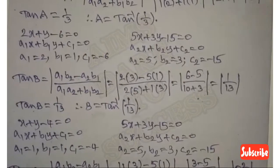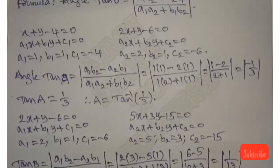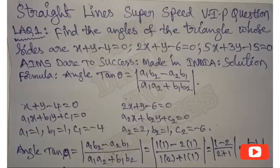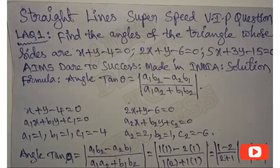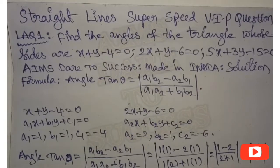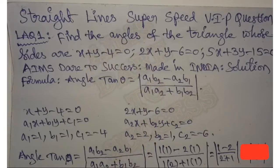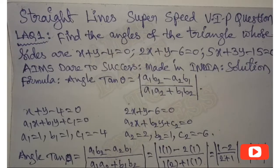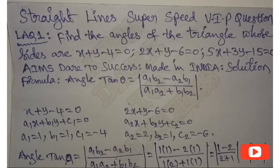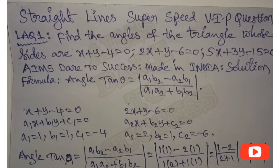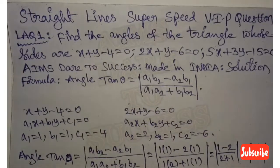If you are satisfied with my explanation, you can use this shortcut tan theta formula — mod of (a1*b2 minus a2*b1) by (a1*a2 plus b1*b2) — anywhere to find the angle between two lines. Please subscribe to our channel, share with your friends, like and comment. I wish you all the very best. For more easy explanations, please go through my channel. Thank you, take care, bye.